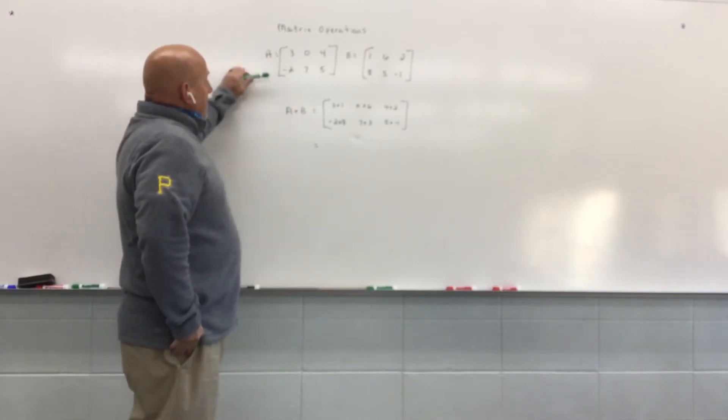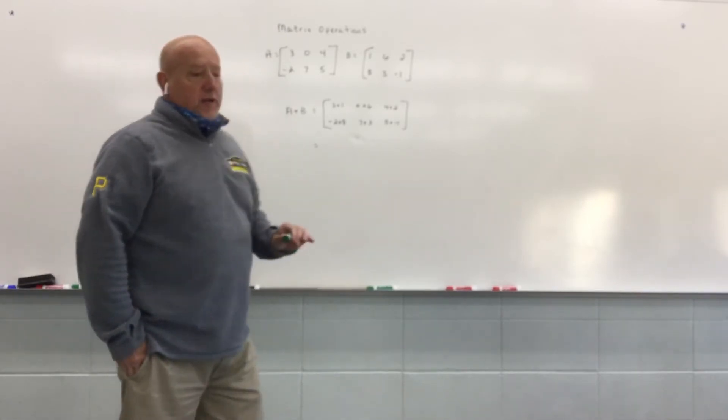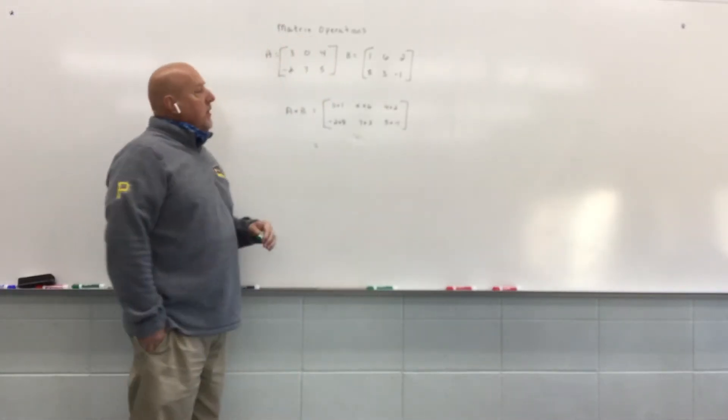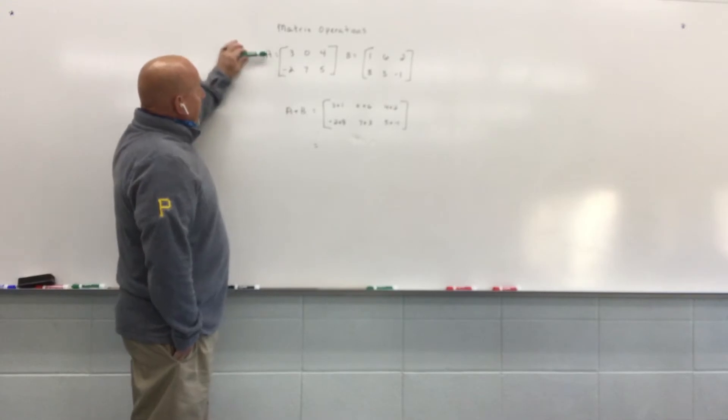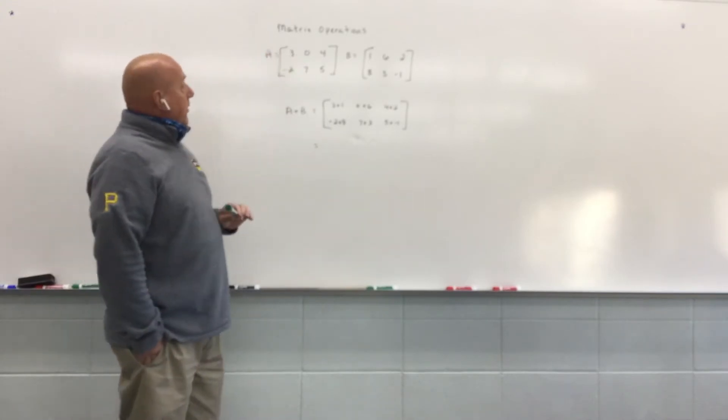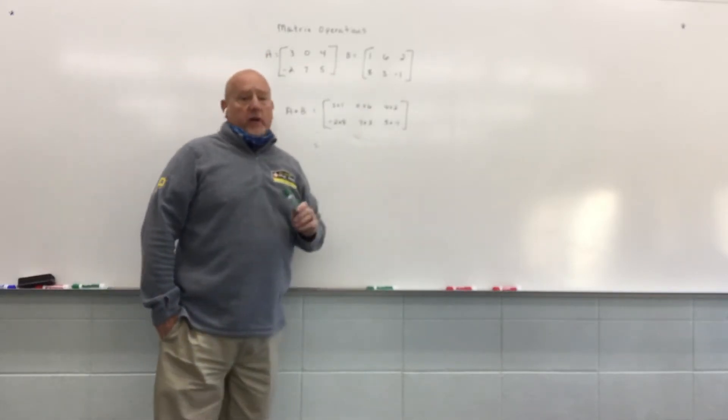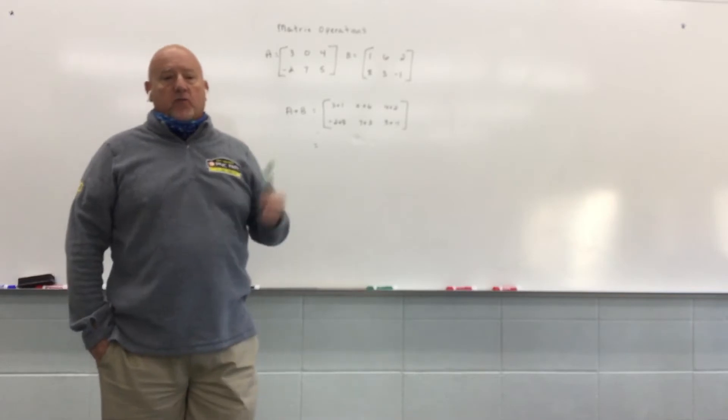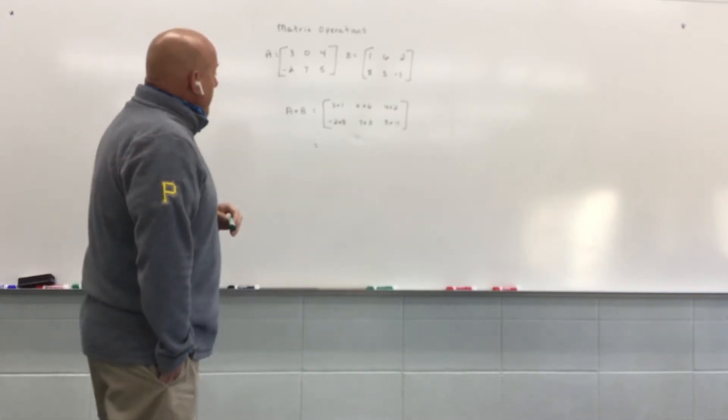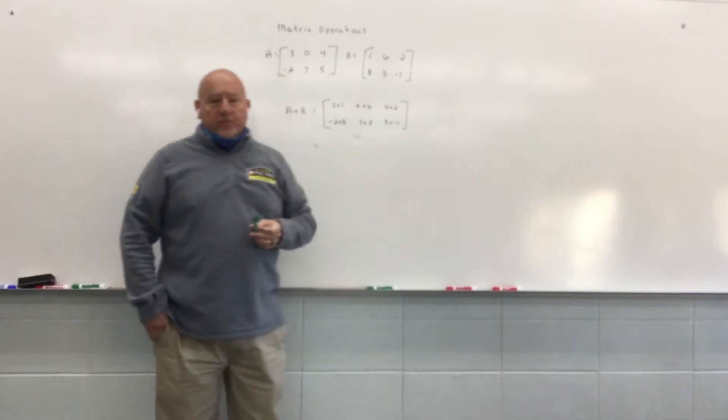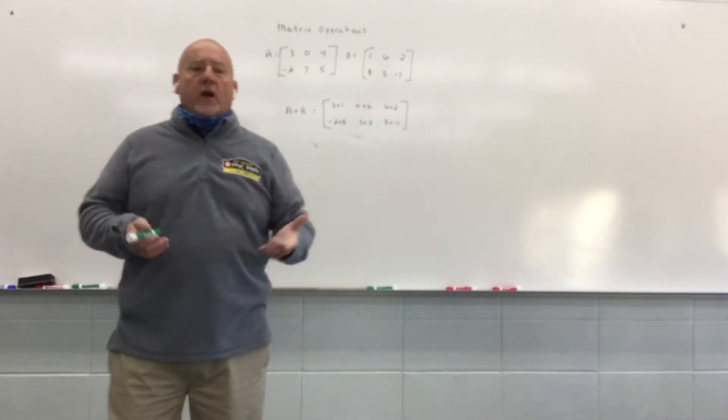First thing is we're going to be able to add and subtract matrices, but the key is the matrices have to be the same size. So matrix A is a 2 by 3 matrix because it's got two rows by three columns. Matrix B is also a 2 by 3 matrix because it has two rows by three columns. And anytime the matrix has the exact same size, you can perform addition and subtraction with that.